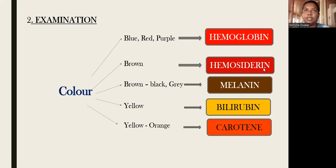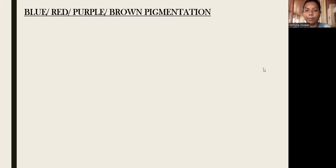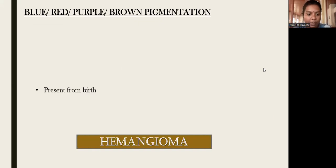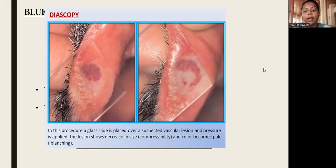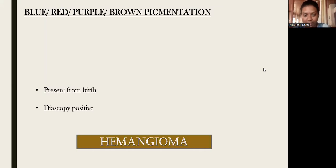If it is not an exogenous pigmentation, we look for endogenous pigmentation. Endogenous pigmentation can have various colors. If the lesion is blue, red, or purple-brown, the first entity is hemangioma. Hemangioma is present from birth and is diascopy-positive. Diascopy is a chairside investigation where a glass slide is placed over a suspected vascular lesion and pressure applied — if the lesion blanches or decreases in size, diascopy is positive and the lesion is vascular.